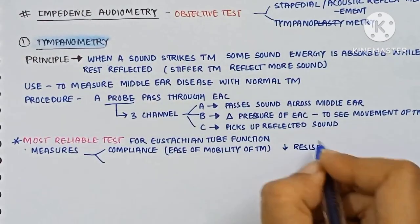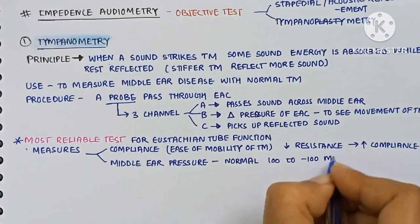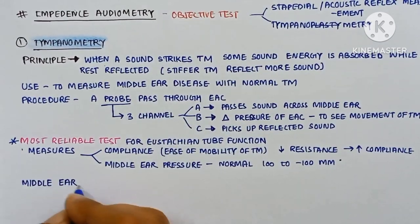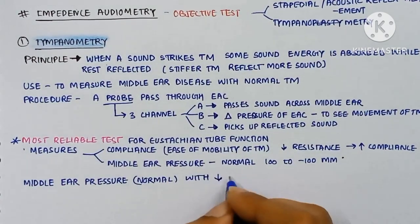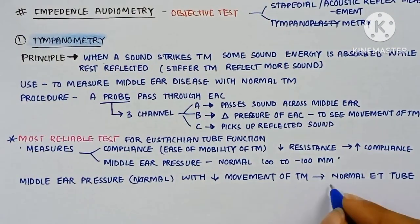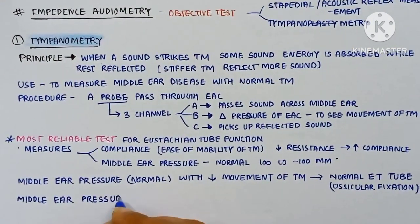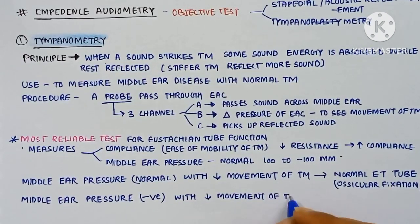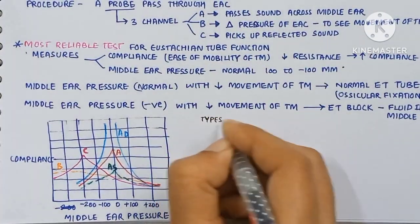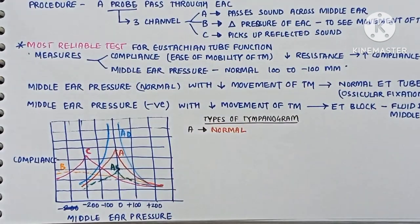Tympanometry is the most rapid test for Eustachian tube function. It measures compliance, which is the ease of mobility of the tympanic membrane. Normal middle ear pressure is minus 100 mmH2O. Normal middle ear pressure with decreased movement of the tympanic membrane is seen in Eustachian tube dysfunction or ossicular fixation. Negative middle ear pressure with low movement of the tympanic membrane indicates ET block and fluid in the middle ear.